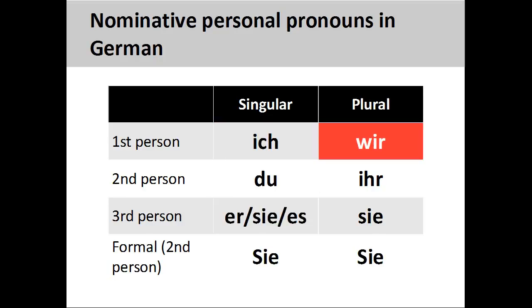We can also apply the concept of actors on the stage to the plural personal pronouns. The first group of actors to appear on the stage is wir, we, the first person plural personal pronoun.